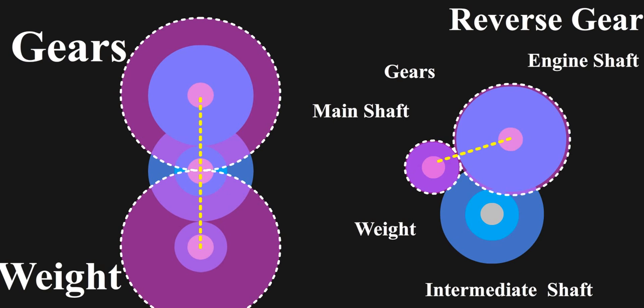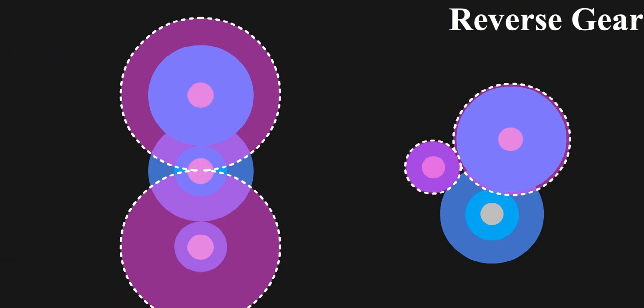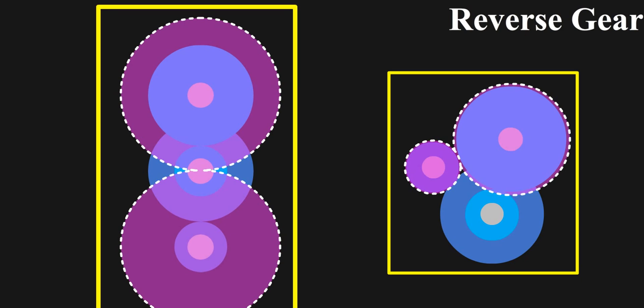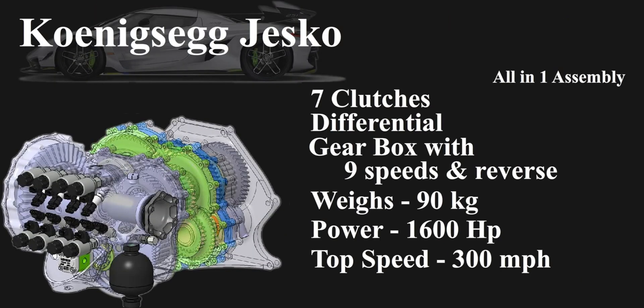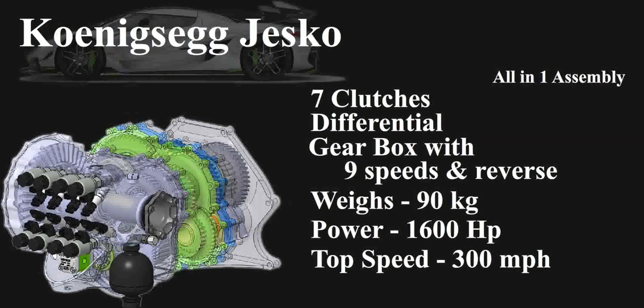To add up to this, the triangular arrangement also helps to decrease the footprint of this whole system making it more compact. And this compactness also means smaller casing is required reducing the weight even more. That's how the most brilliantly designed sports car transmission works and weighs as light as 90 kgs while being able to transmit 1600 hp at 9 plus 1 different speed ratios.